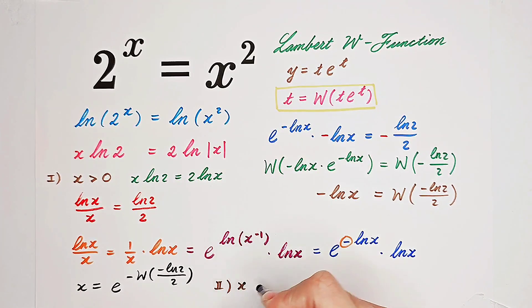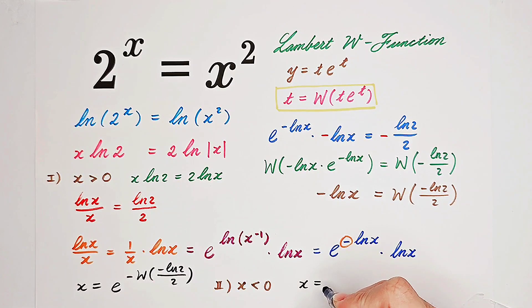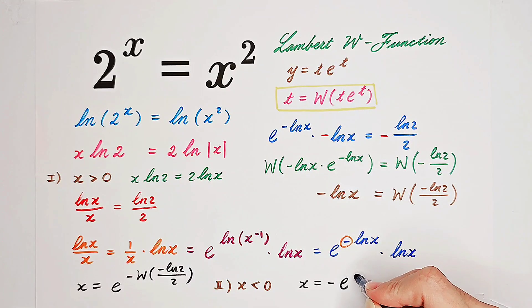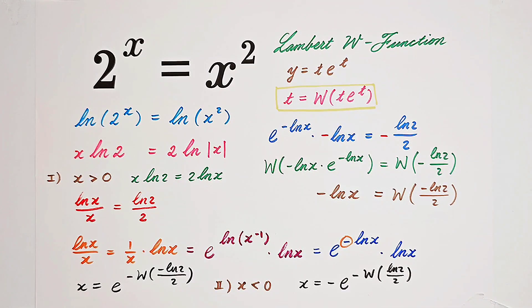Of course, we also have our second case. In our second case, consider x is less than 0. The steps are totally similar, so you can try it yourself — solve for x in the case x is less than 0. I can tell you the answer: if x is less than 0, you get x is negative e to the power of negative the Lambert W function of positive natural log of 2 over 2. So at the end of the solution, you will get two answers. However, they will provide you with infinitely many solutions.